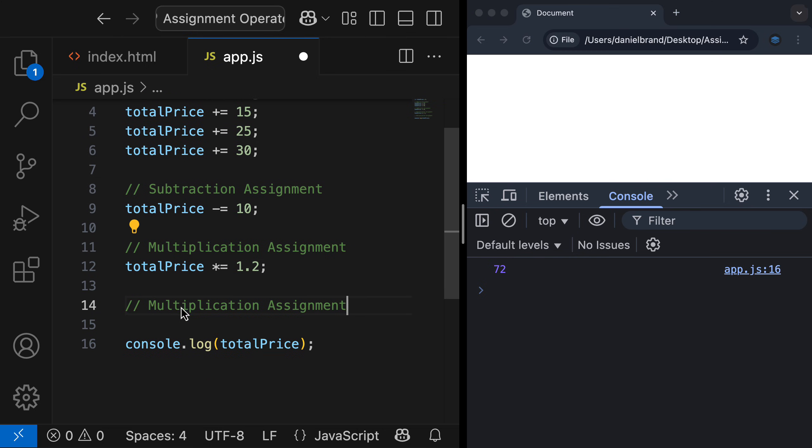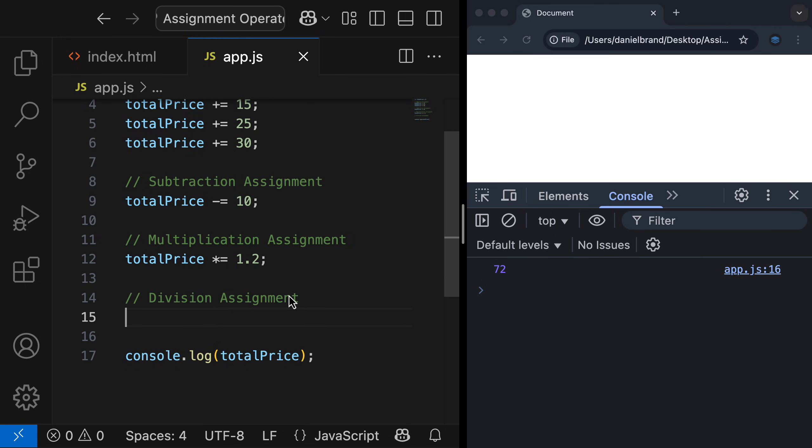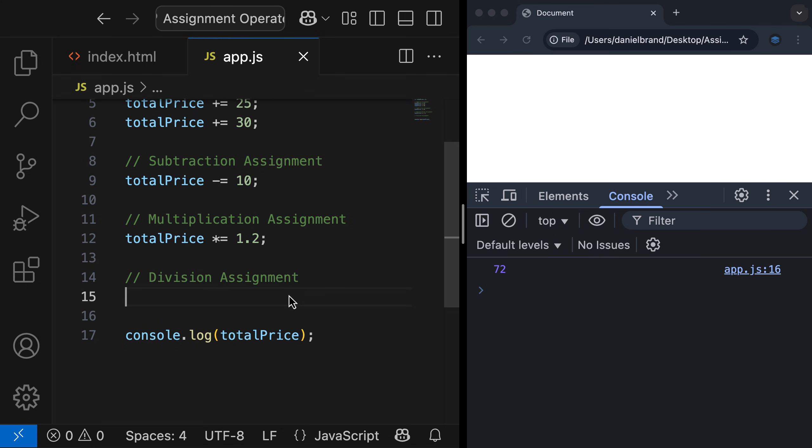Okay, the final one, let's go do division assignment. To simulate this, let's say that this is a checkout using one of those buy now pay later schemes, where you can split the total price into three equal payments over time. So for now, we just want to work out the price the user needs to pay today. So we would do totalPrice divide equals 3. This now divides the total price of 73 by 3. I'll refresh and you can now see the total price is 24.